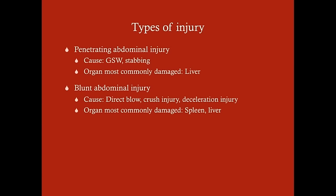The two types of abdominal injury are penetrating and blunt. Penetrating injury is most commonly caused by gunshot wounds and stabbings, and less commonly by shrapnel. The organ most commonly damaged in penetrating injury is the liver, because it is large, covers much space, and is more superficial. Blunt abdominal injury is usually caused by car accidents — direct blows, crush injuries, or deceleration injuries. The organ most commonly damaged in blunt trauma is the spleen, though the liver is also frequently injured.